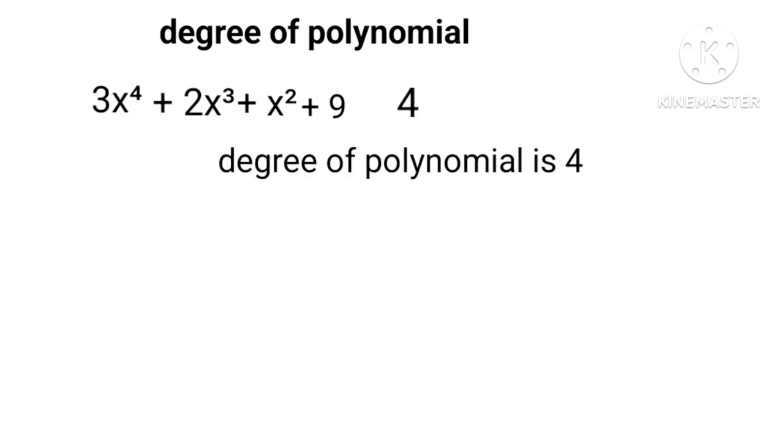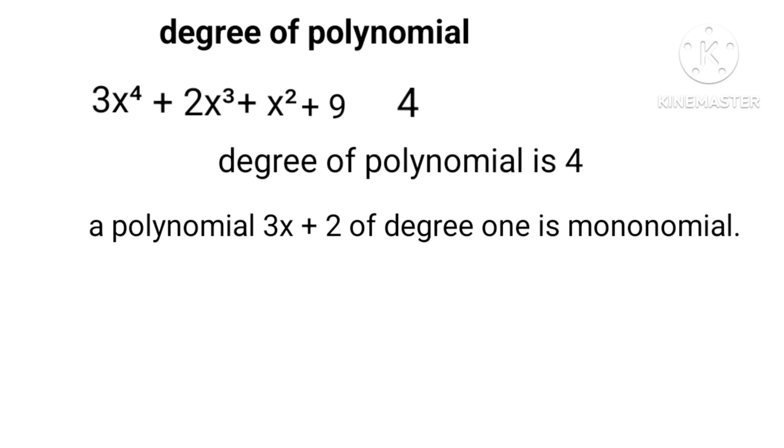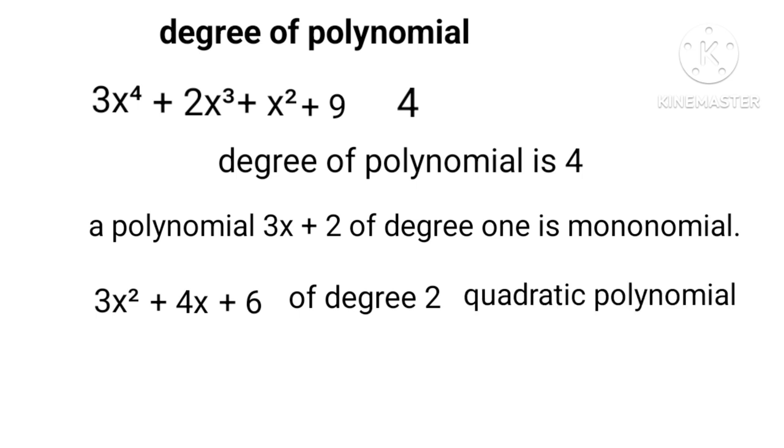A polynomial 3X plus 2 of degree 1 is monomial. 3X² plus 4X plus 6 of degree 2 is called a quadratic polynomial. And 10X³ plus 3X² plus 2X plus 5 is a cubic polynomial.